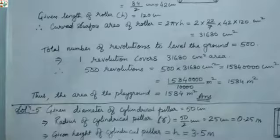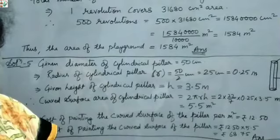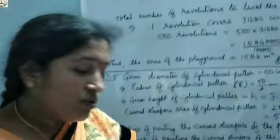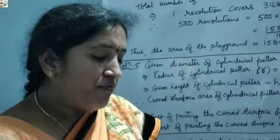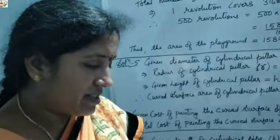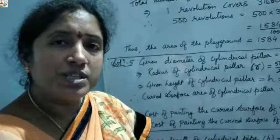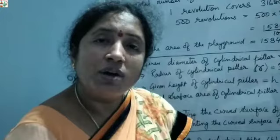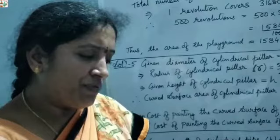The 5th question: a cylindrical pillar — like electric poles — is 50 cm in diameter and 3.5 m in height. Notice one measurement is in cm and the other is in meters, so we need to convert cm to meters. We need to find the cost of painting the curved surface of the pillar.